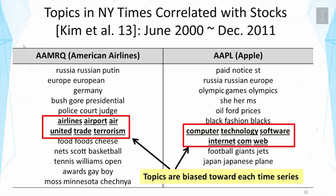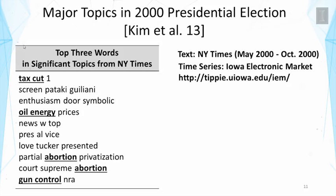The time series has effectively served as context to bias topic discovery. From another perspective, these results reveal what topics might be correlated with each company's stock price — serving as a starting point for people to further investigate the issues and find true causal relations.